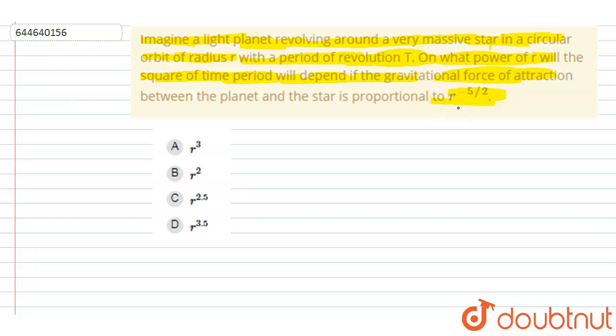So we know that in this case, the centripetal force will be the gravitational force of attraction, and gravitational force is proportional to this. So let me write down the proportionality constant k.